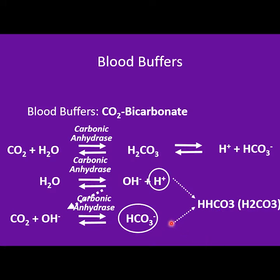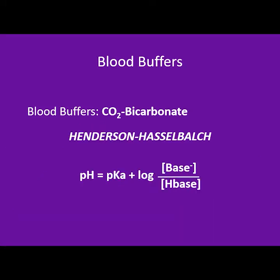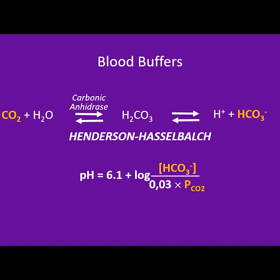Bicarbonate and hydrogen combine to form carbonic acid. The Henderson-Hasselbalch equation helps us understand the relation between pH and the components of a buffering system: pH equals pKa of the buffering system plus the logarithm of the concentration of the base divided by the concentration of the acid in the buffering system.